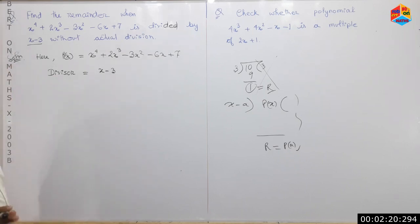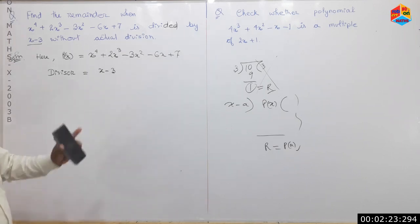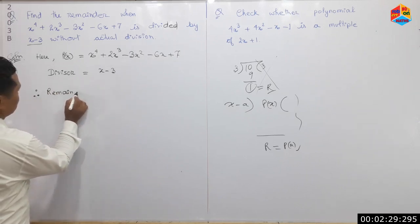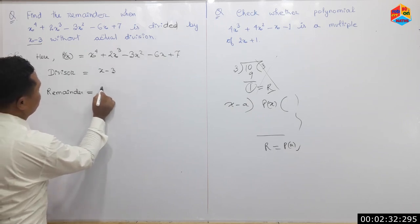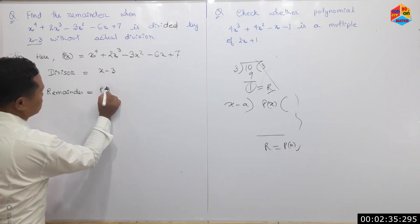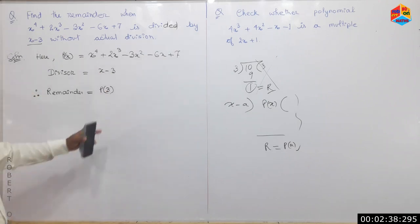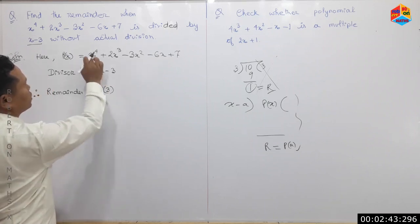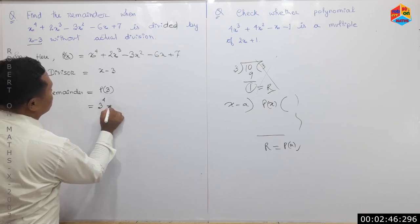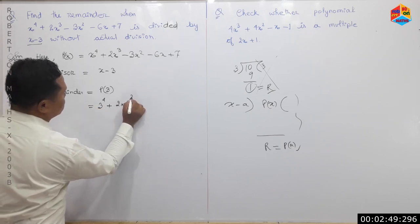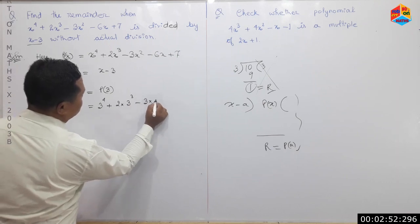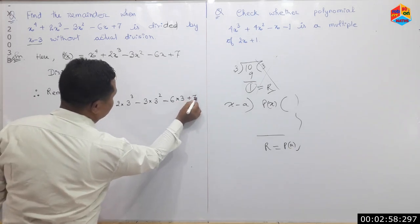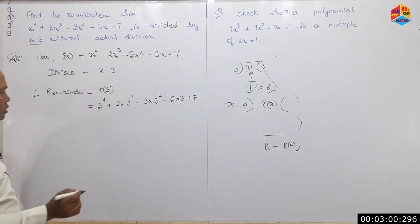Divisor is x minus 3. We are going to take a look at the remainder. The remainder is P of c, where c is 3. P of 3 is the remainder. So we compute: 3 to the power of 4 plus 2 into 3 to the power of 3 minus 3 into 3 squared minus 6 into 3 plus 7.